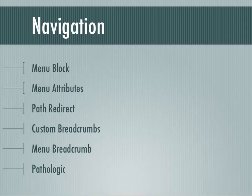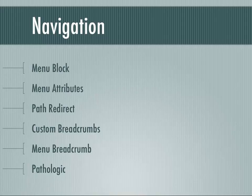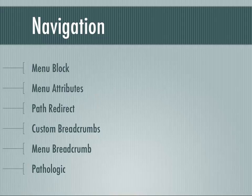MenuAttributes lets you add classes, IDs, and target attributes to menu items. In the Drupal menu editing system, all you can do by default is give a menu item a path and a name. MenuAttributes expands what every single menu item in Drupal is capable of storing and displaying in your theme. MenuBlock provides classes and IDs automatically, but if you need something more, MenuAttributes can get you there.